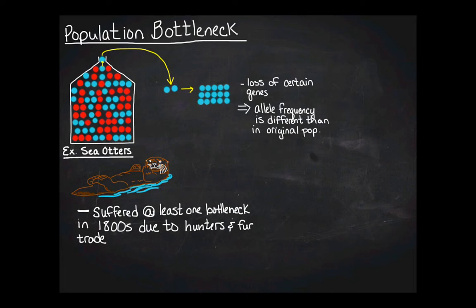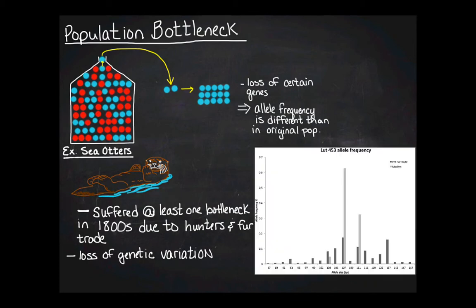And so scientists have gone through and they've actually sequenced the DNA from the sea otters. And they've compared it to the DNA in sea otters pre-fur trade decimation. And so they've done that by going and actually obtaining samples of DNA from the pelts of the sea otters. And this is what they found, that there's a loss of genotypic variation post-fur trade, which is kind of what you would expect.